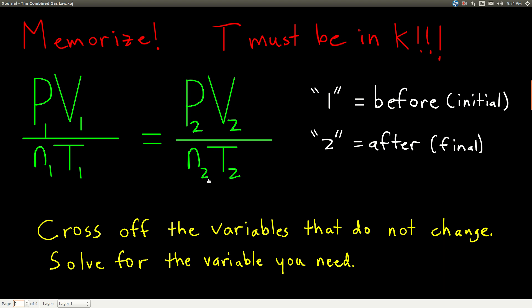On the other hand, if nothing at all is said about one or more of the variables, like they don't mention N, a lot of times that happens. Nothing is said about N, the amount, the number of moles, then you cross it off because that means it's not changing.